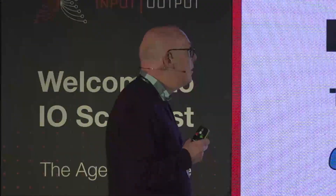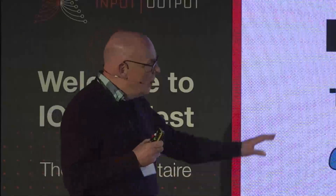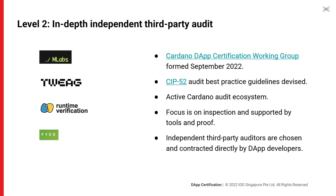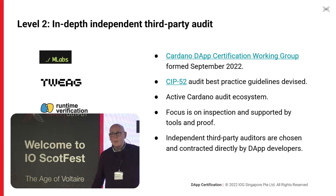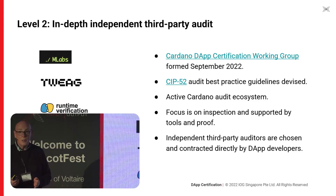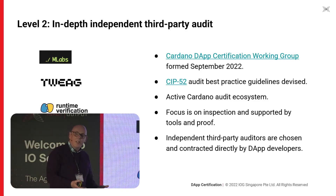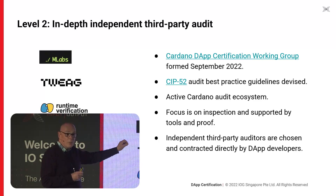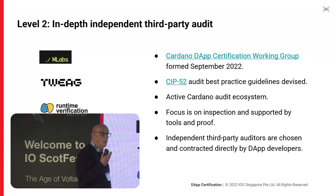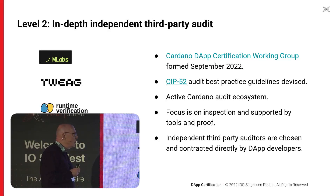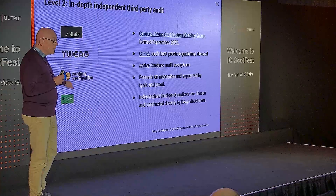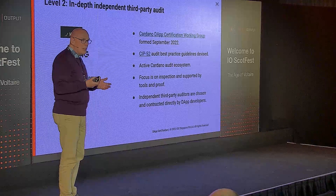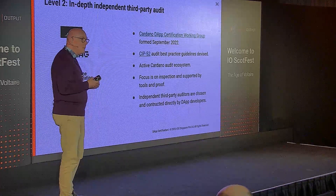Let's talk about in-depth audit — this is where the MBO dimension comes in. We formally set up the Cardano DApp certification working group in September, but we've been working with the community right through the year. On that basis, we built CIP52, which is a set of best practice guidelines for audit of Cardano DApps. We want to raise standards and develop standards that describe what audit — tool-based audit — should look like. There is an active Cardano audit ecosystem; among the auditors are FYEO, Runtime Verification, TWEAG, and MLabs. The focus is on inspection and reading code, supported by tools and proof.